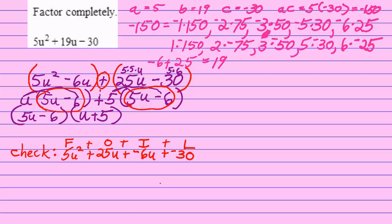Both terms in the middle are u terms, so I can add them. 25u minus 6u is positive 19u, so my answer is 5u squared plus 19u minus 30, and that is what we started with.